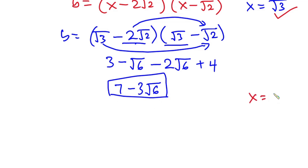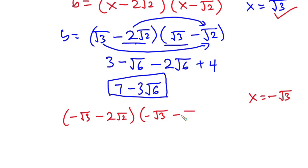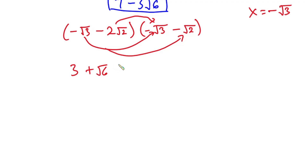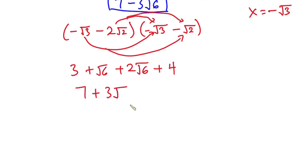When x equals negative √3, we have b equals (negative √3 minus 2√2)(negative √3 minus √2). Expanding: negative √3 times negative √3 gives 3, then we get positive √6, then positive 2√6, then positive 4. Simplifying, b equals 7 plus 3√6.